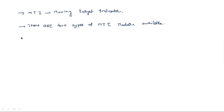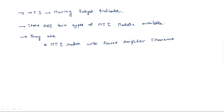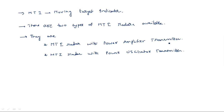The first type is MTI radar with power amplifier transmitter, where the power amplifier is used as the transmitting section. The second type is MTI radar with power oscillator transmitter. By seeing these two names we can understand that in the transmitting section, one time we are using a power amplifier and another time we are using a power oscillator.